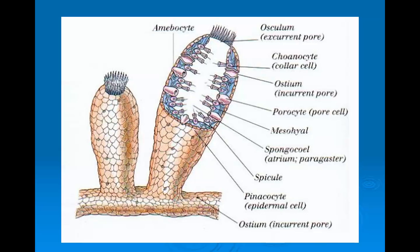In this diagram you can see the sponge is attached to a substrate. The choanocytes — collar cells — are labeled for you to see, along with the ostium, which is the pore. The spongocoel is the cavity on the inside, and the exit is the osculum, or excurrent pore.